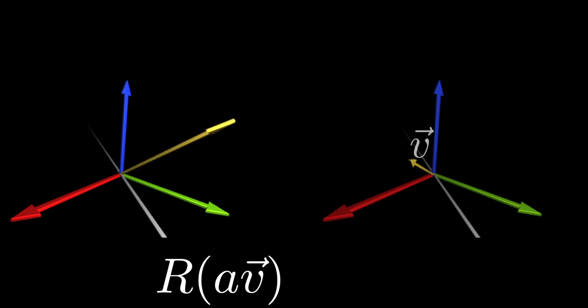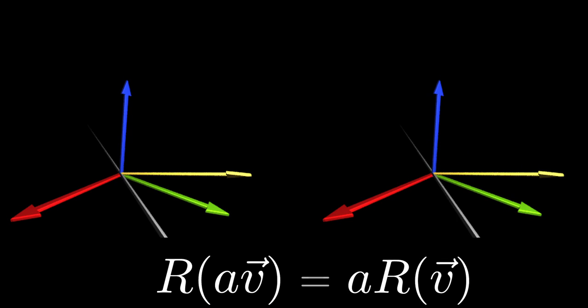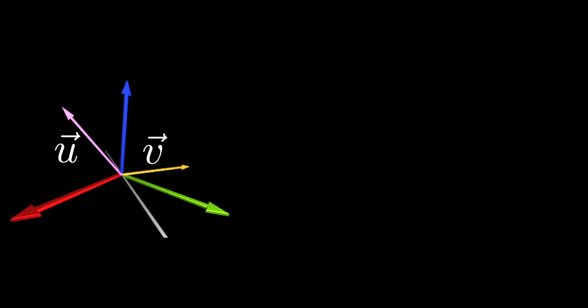Rotations don't change the length of a vector. So if you scale a vector and then rotate it, you get the same thing as if you first rotate it and then scale the vector.